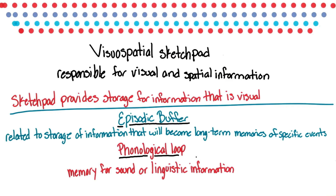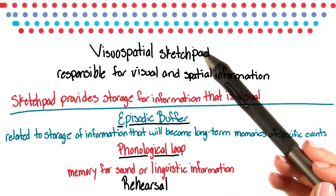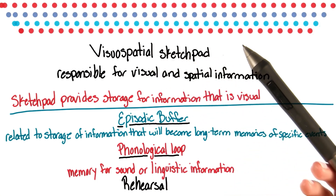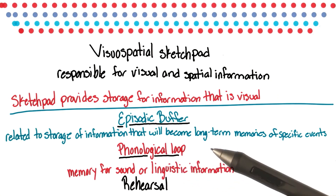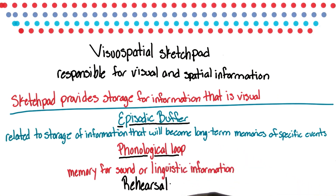Now, if we want the information that we've learned to last and become a long-term memory, we have to rehearse it. This is called rehearsal. As the name implies, rehearsal is a process of practicing or reciting the information to ourselves. Going back to the example of the letters — your visuospatial sketchpad allows you to see the numbers in your head, your phonological loop allows you to hear the numbers, and you'll need to rehearse the letters if you want to retain them for later use.